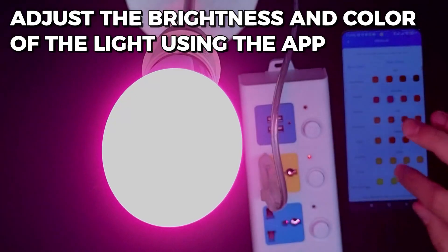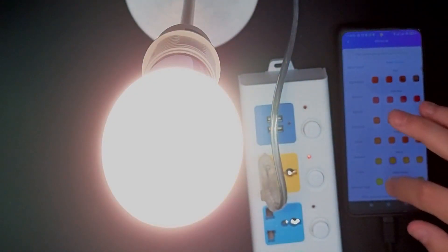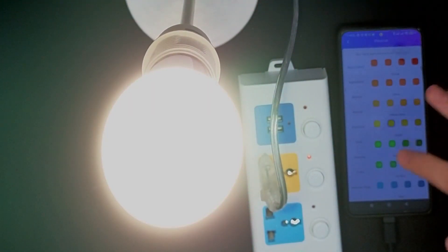Adjust the brightness and color of the light using the app. Set up voice control with Alexa or Google Home.